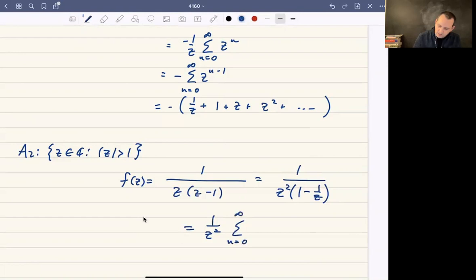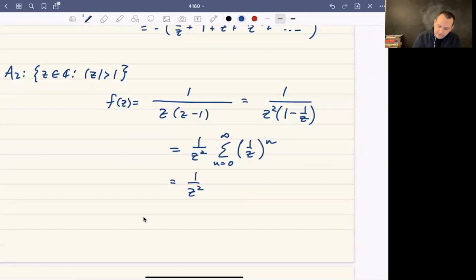times the sum from 0 to infinity of 1 over z to the n. And so this is going to be 1 over z squared times, let's see, what is this sum? It's going to be 1 plus 1 over z plus 1 over z squared and so on. So this is going to be 1 over z squared plus 1 over z cubed plus 1 over z to the fourth and so on.